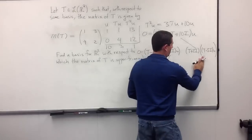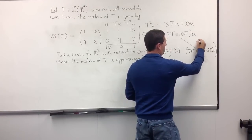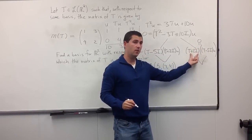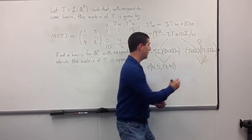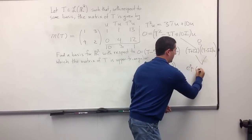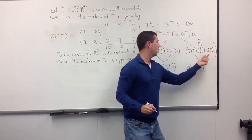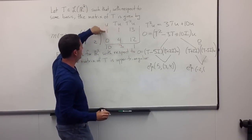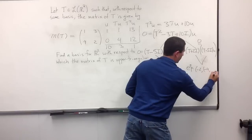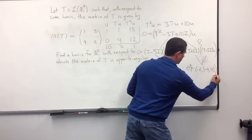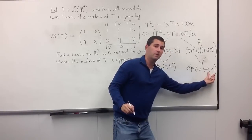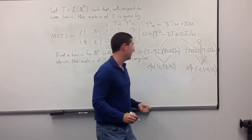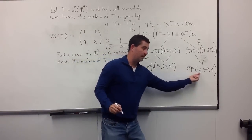Similarly, (T − 5I)u lies in the null space of T + 2I, so −2 is an eigenvalue. The eigenvector is (T − 5I)u: Tu is (1, 4), minus 5u gives (1 − 5, 4 − 0) = (−4, 4). So (−4, 4) is an eigenvector for the eigenvalue −2. Now we have two distinct eigenvalues with corresponding eigenvectors.